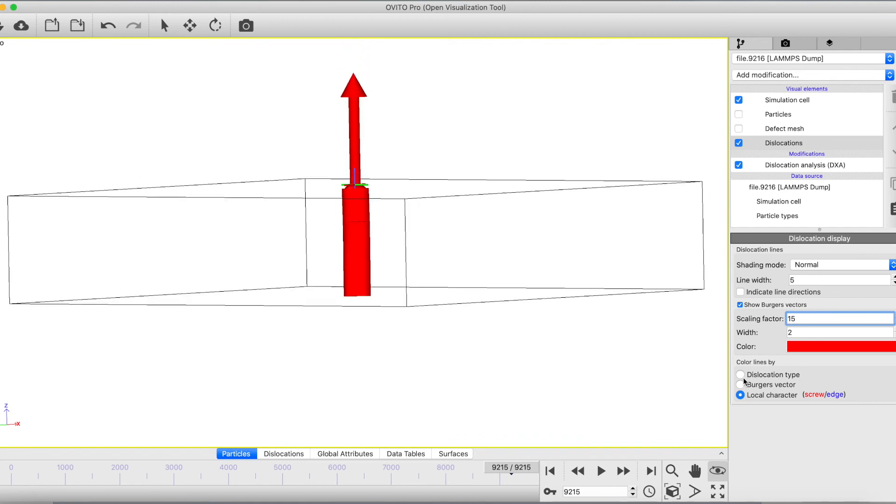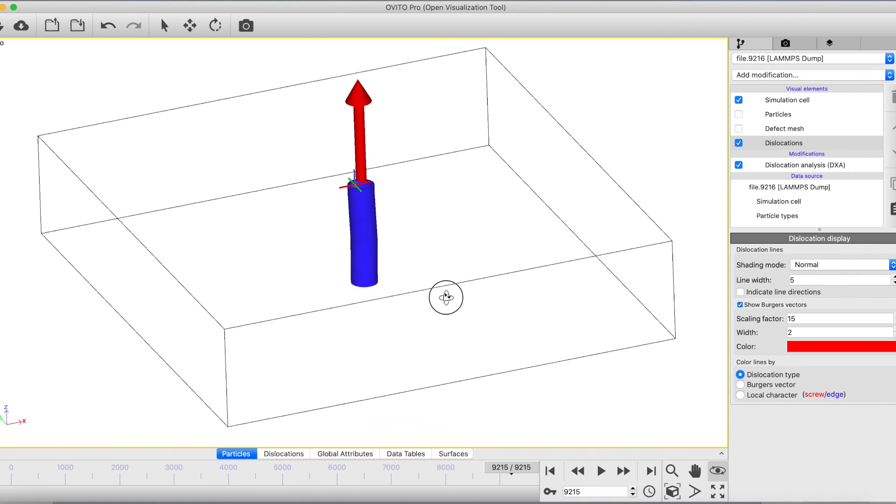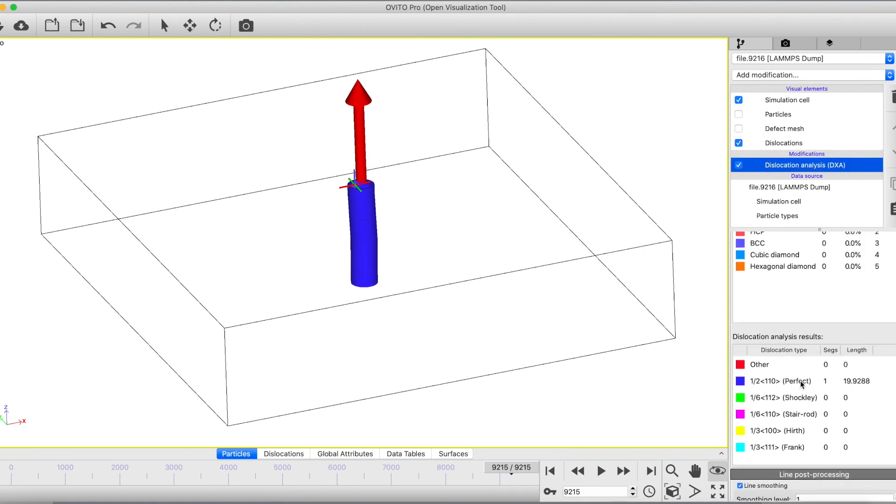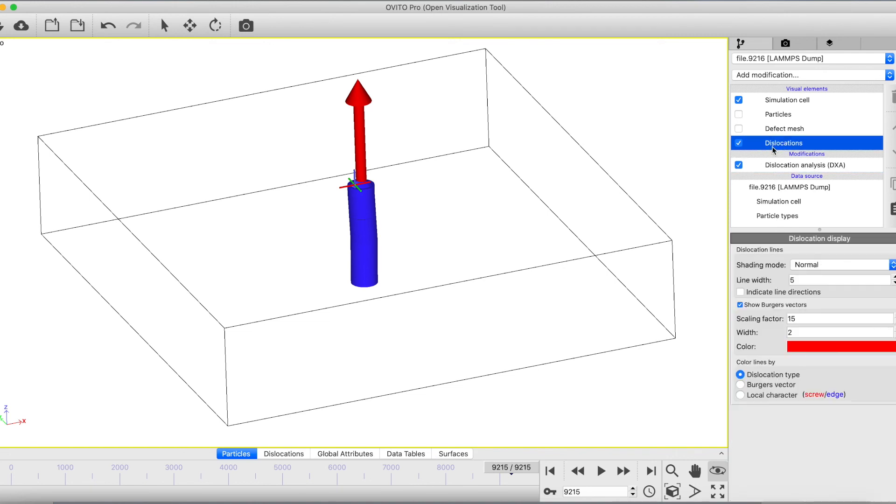Now what I do is I press show burgers vector and increase the length from 8 to 15. When I zoom out, you can see the perfect screw dislocation along with its burgers vector. You can also see it's a perfect screw with the length of 19.9 angstroms.